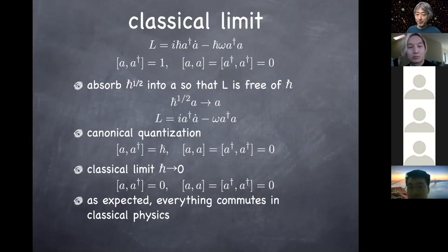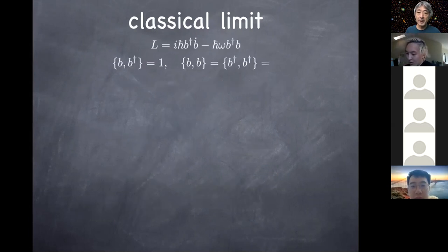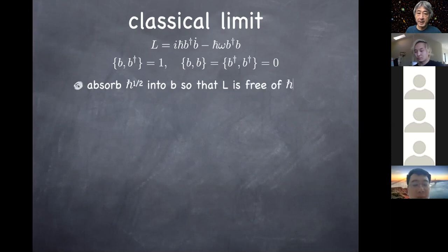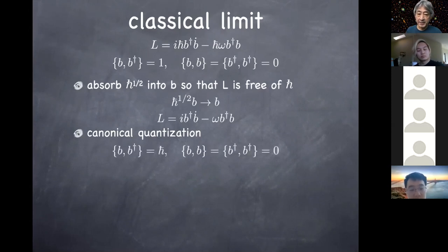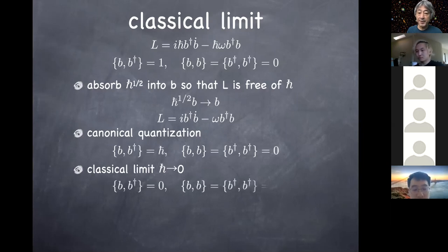Now for the fermion: I go through the same steps. I absorb ħ^{1/2} into the normalization of b and b-dagger so the Lagrangian is free of ħ. The canonical quantization condition using the anti-commutator gives the relation with ħ in it. Now I take the classical limit — everything anti-commutes. On the face of it, it looks similar to the bosonic harmonic oscillator, except everything is replaced by anti-commutators rather than commutators.